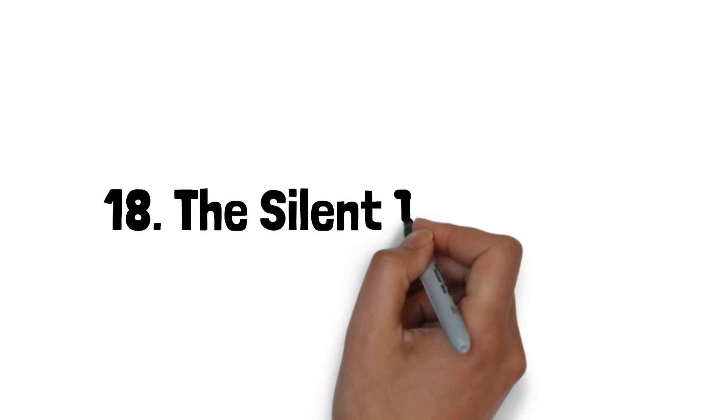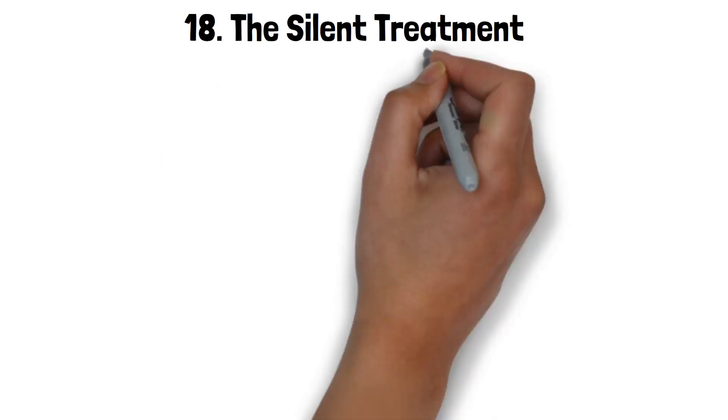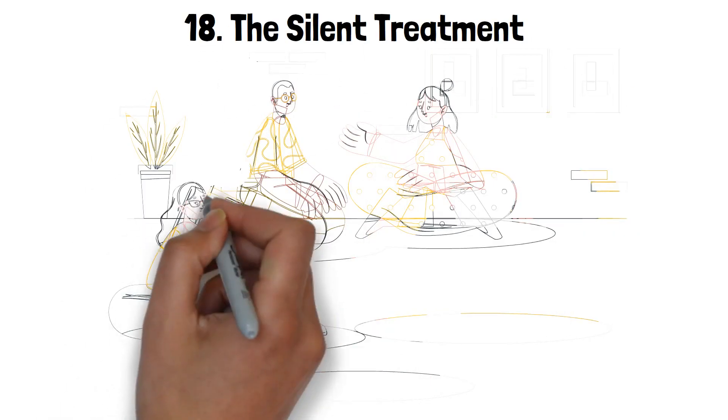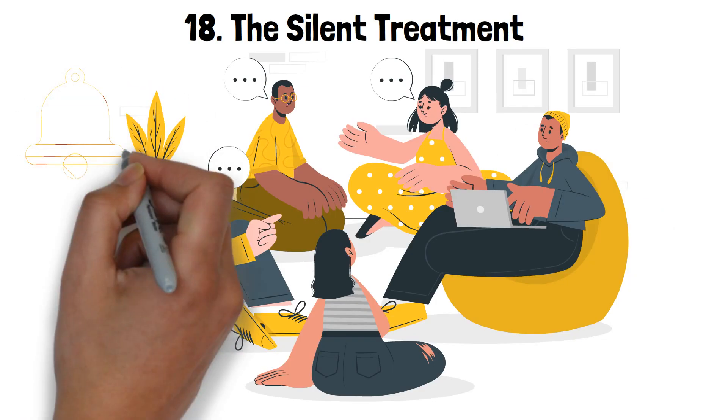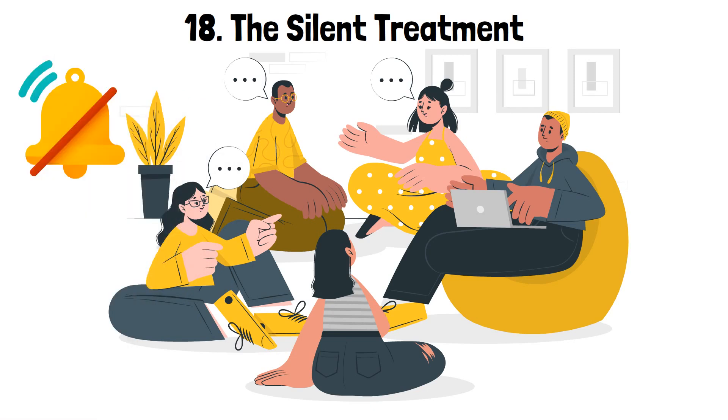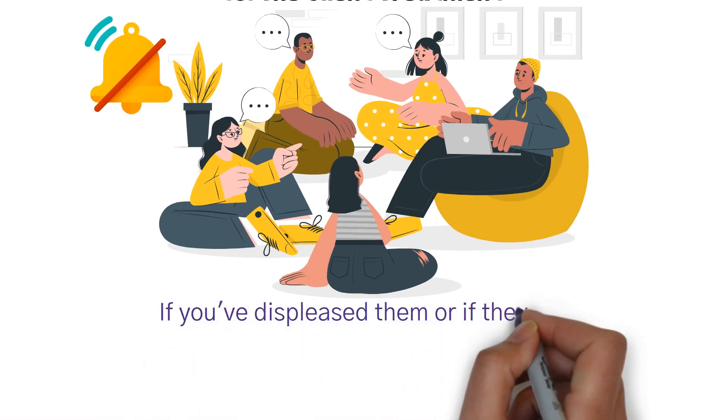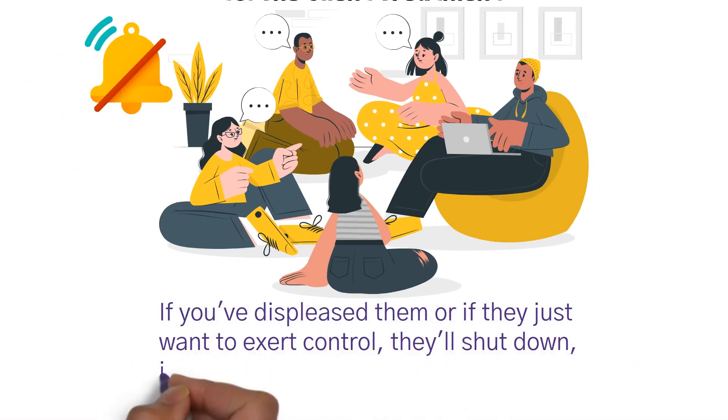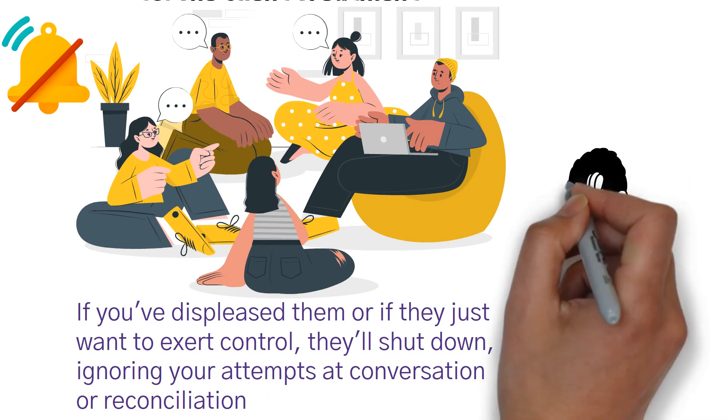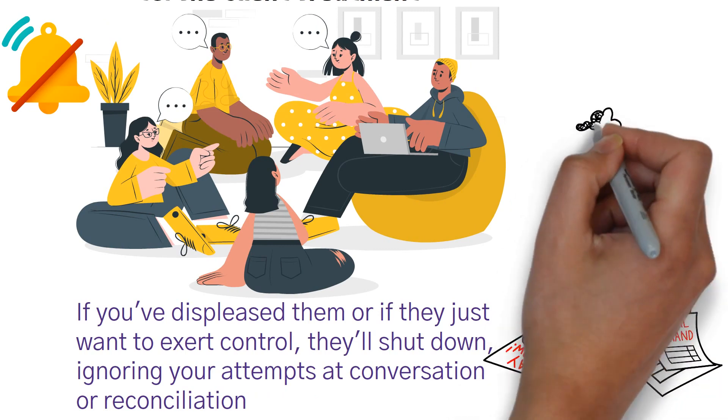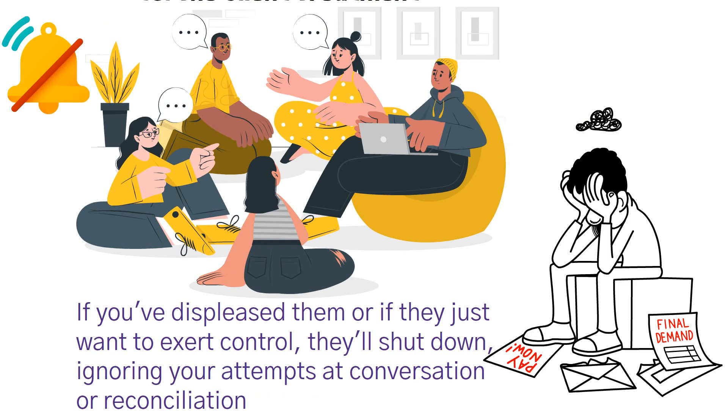18. The silent treatment. Withholding communication can be just as powerful as words. When a manipulator uses the silent treatment, it's a form of emotional punishment. If you've displeased them, or if they just want to exert control, they'll shut down, ignoring your attempts at conversation or reconciliation. The pain of this silence can be agonizing, making the offender more willing to concede or apologize, just to restore harmony, even if they weren't in the wrong.